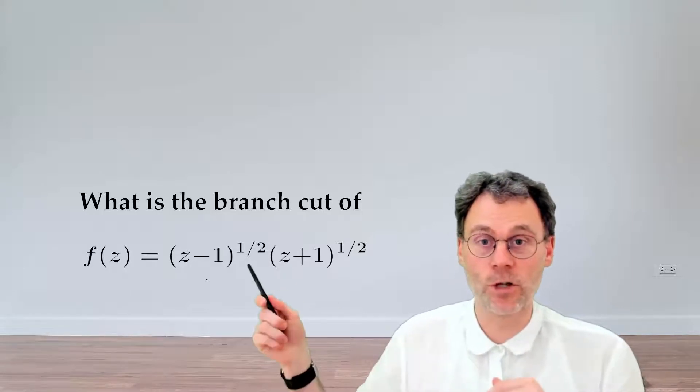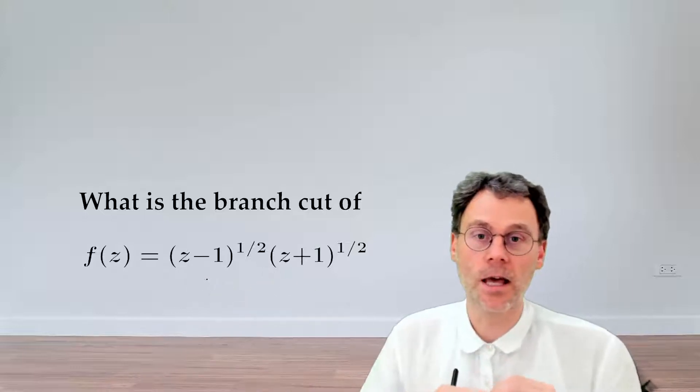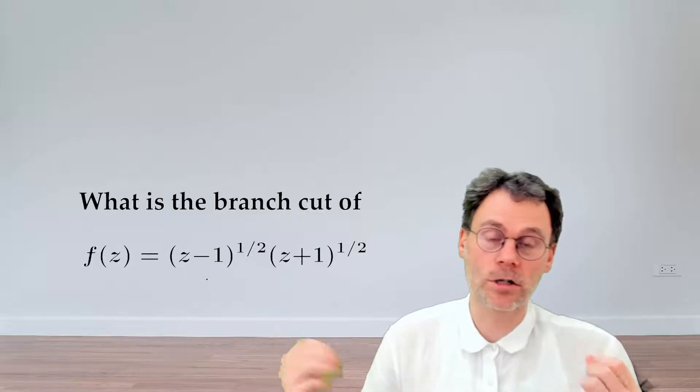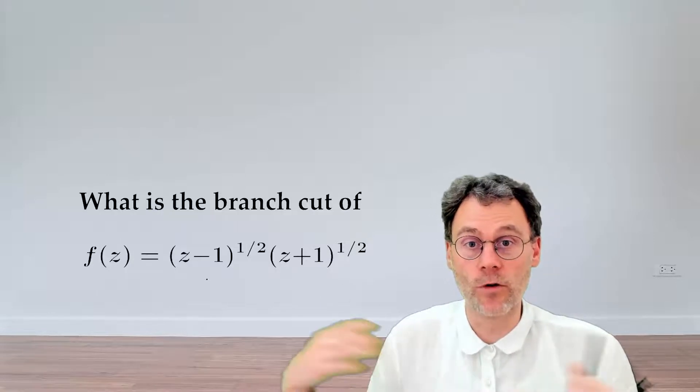Here we have a function which is the product of two square roots. And the question is, if we use the conventional choice of branch cuts for each of these square roots, what is then the branch cut of the overall function?